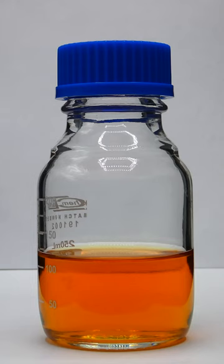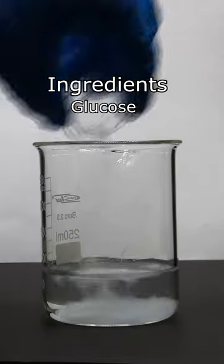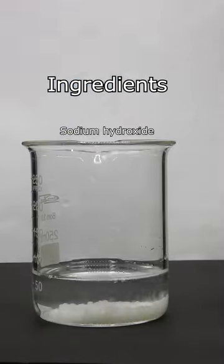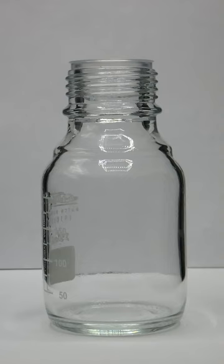So this reaction is called the traffic light demonstration and can be made by first dissolving some glucose, sodium hydroxide, and a dye called indigo carmine in water, and then adding the solutions together.